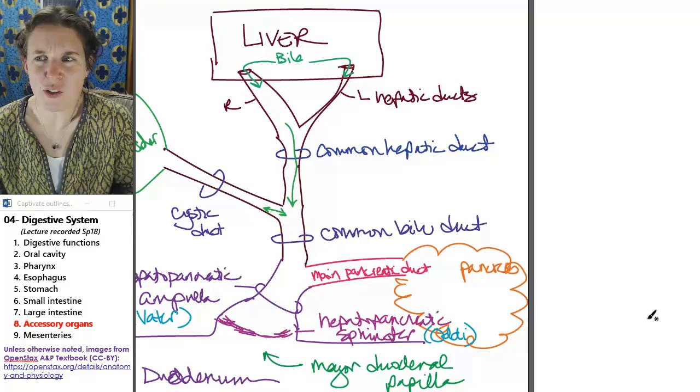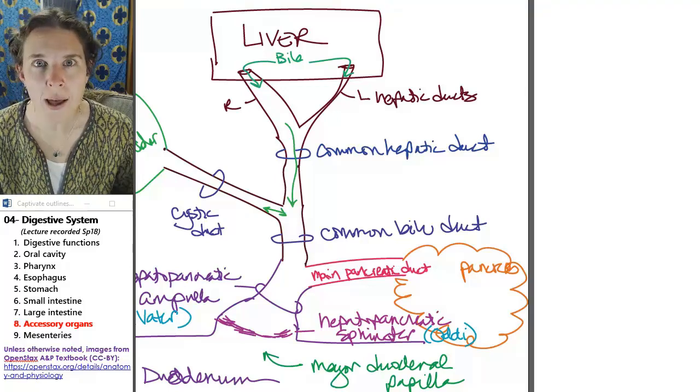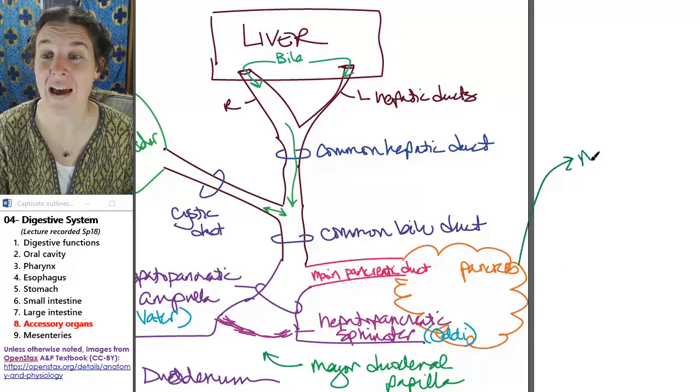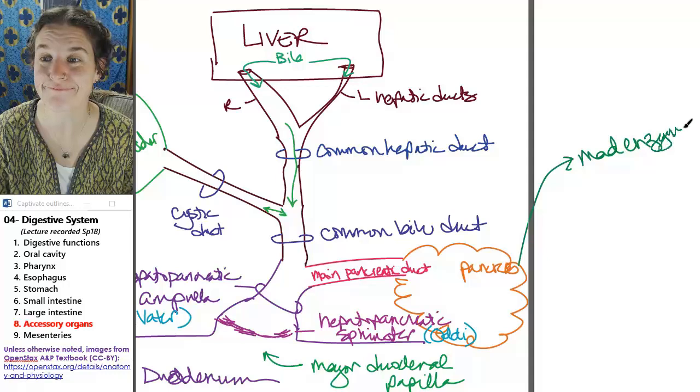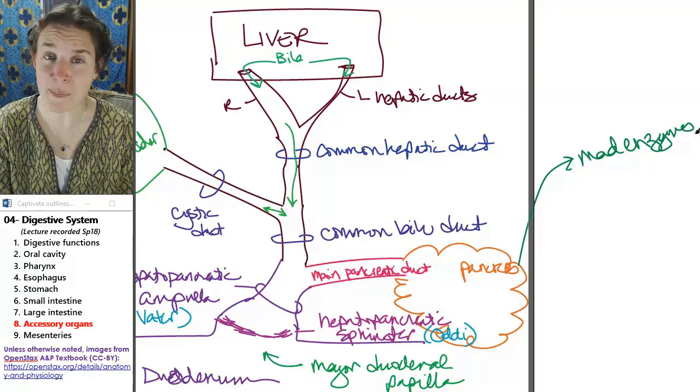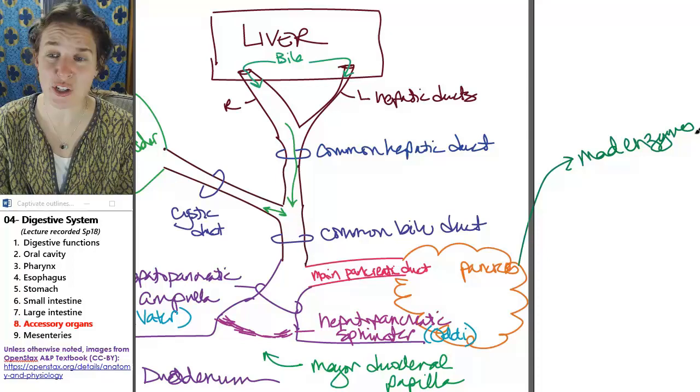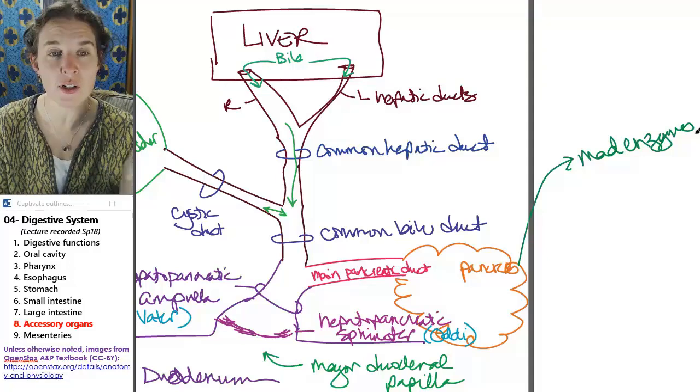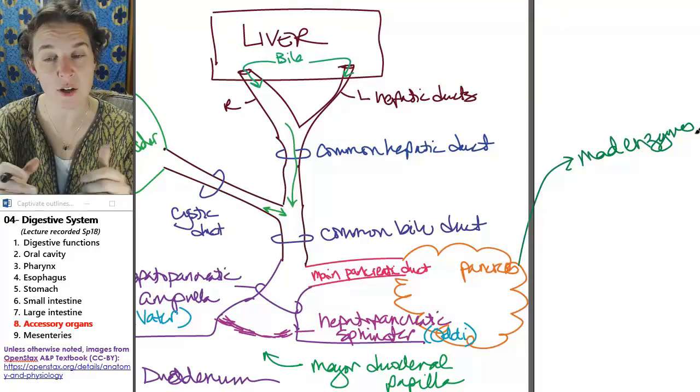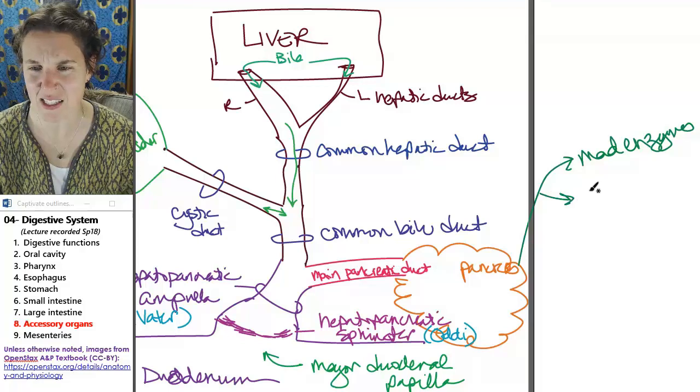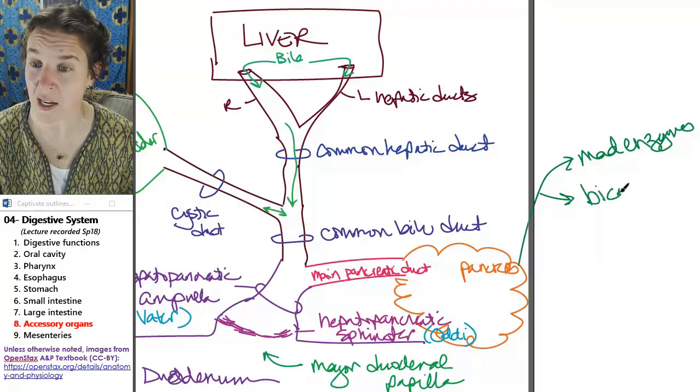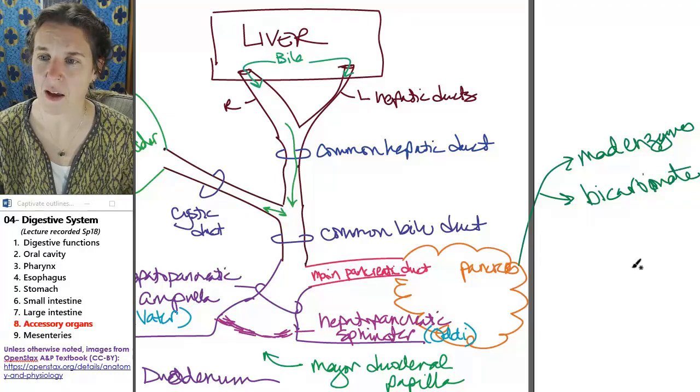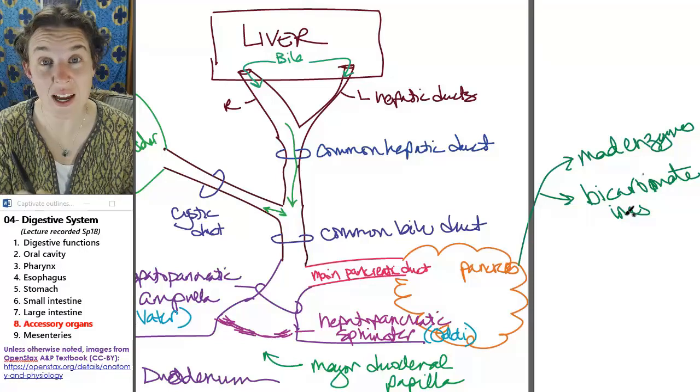Pancreas - what are they doing? The pancreas is producing mad enzymes like all of your lipases, your sugar digesters, your proteases, all of your nutrient enzymes. Your pancreas are making those. Your pancreas is also producing bicarbonate ions.